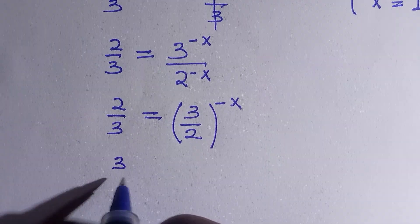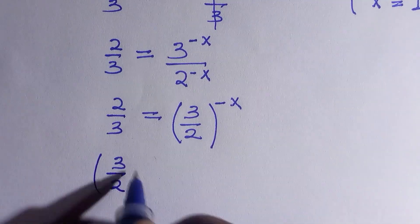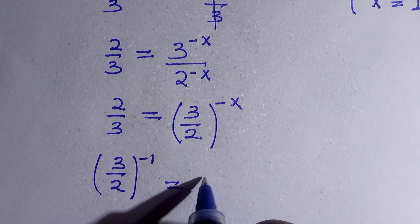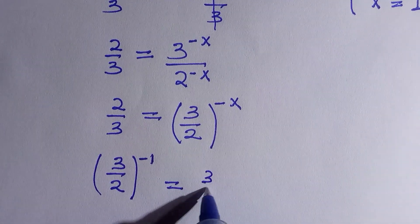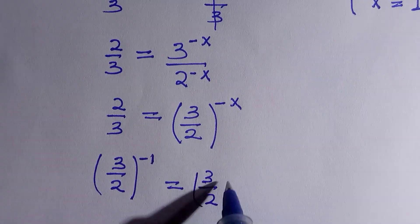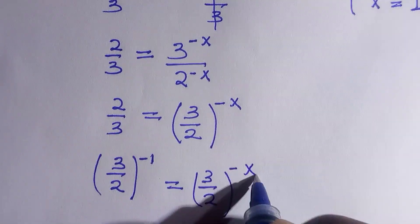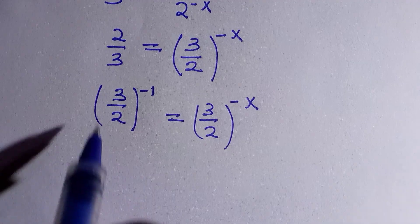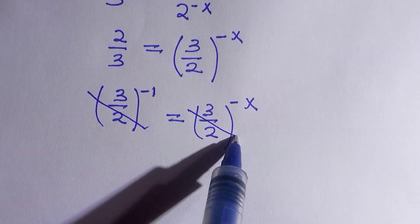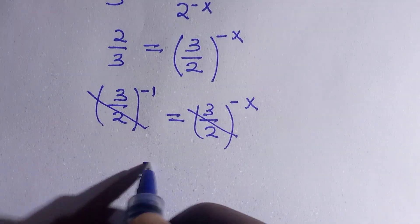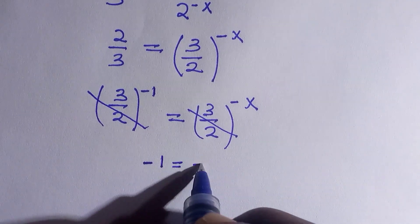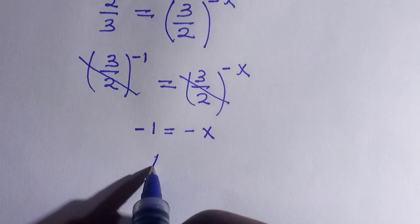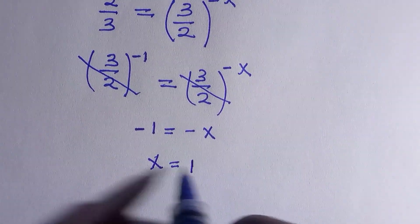If I change this and reverse it as 3 divided by 2, it means that this will raise to the power of negative 1. And everything equals 3 divided by 2, then raised to the power of minus x. I did that to have a common base, and the base can cancel now. Then we have the power as minus 1 equals to minus x, and if the negatives cancel, we have x equals to 1.